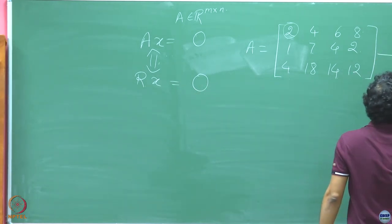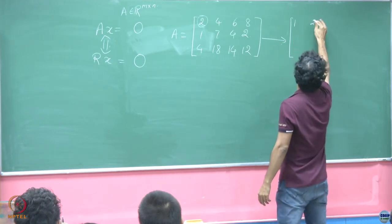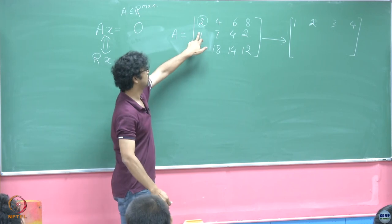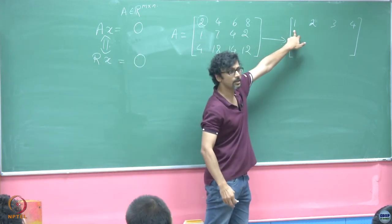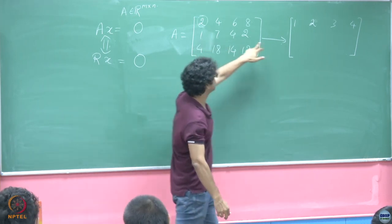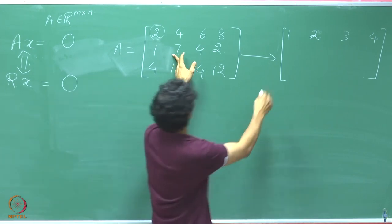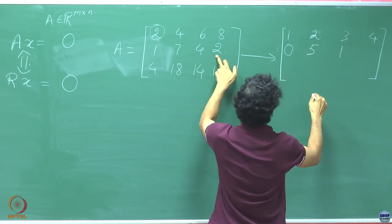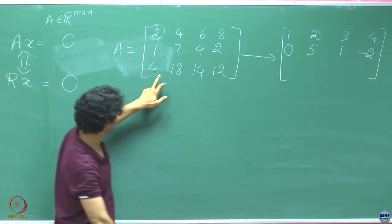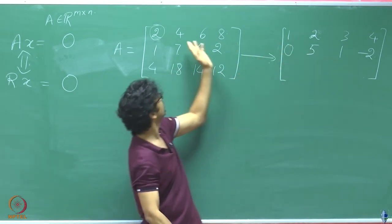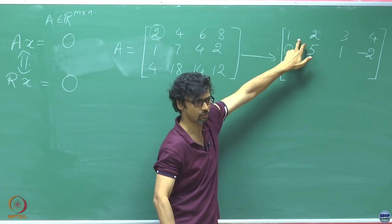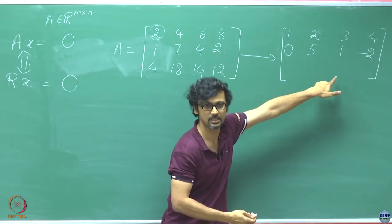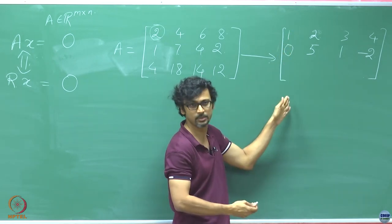The next goal is to generate zeros below the leading one. Subtracting the first row from the second: 0, then 7 minus 2 is 5, 4 minus 3 is 1, and 2 minus 4 is minus 2. For the third row, subtracting 4 times the first row: 0, 18 minus 8 is 10, 14 minus 6 is 2... actually that is correct, and 12 minus 16 gives minus 4. So I am combining one operation of the first kind and two operations of the second kind in one step.